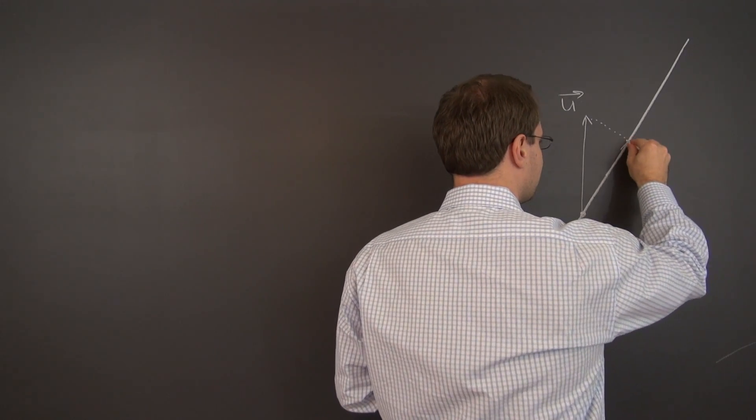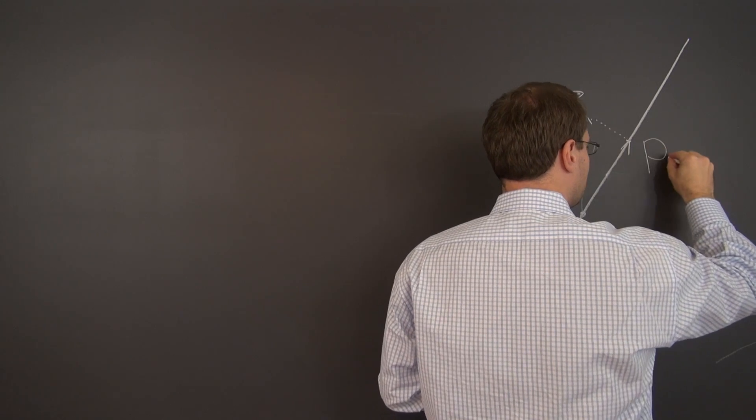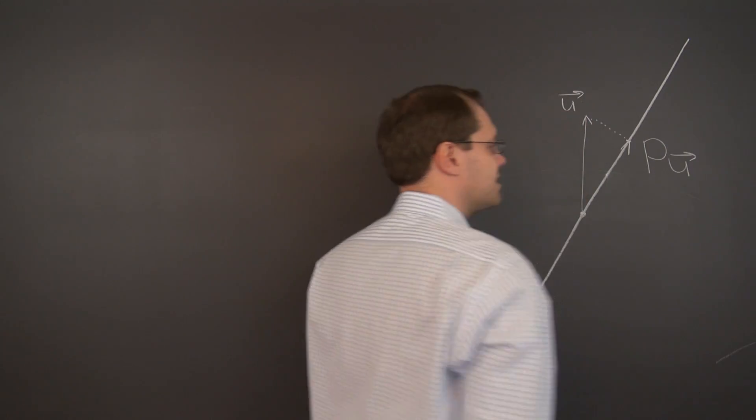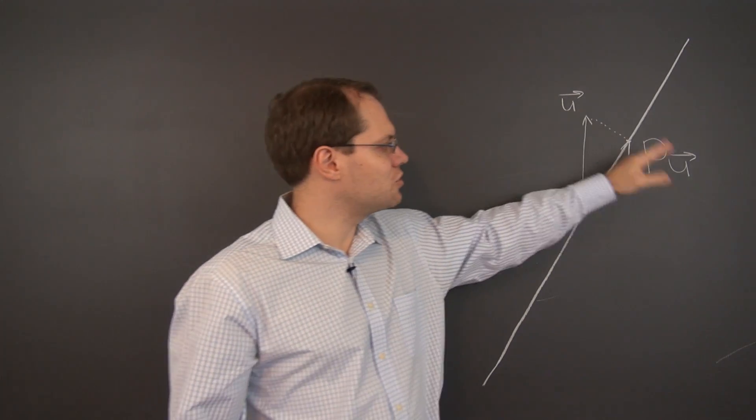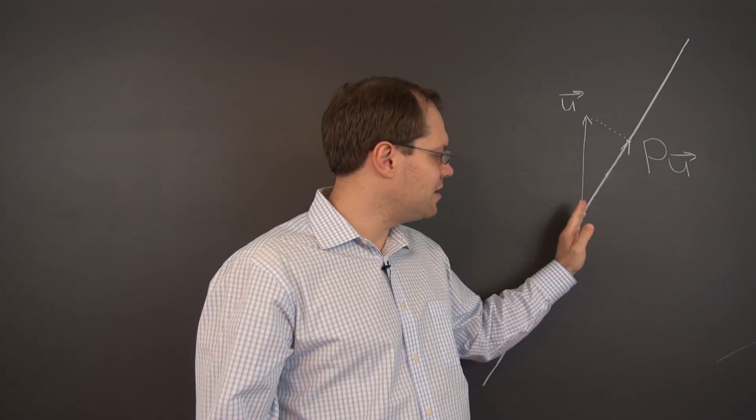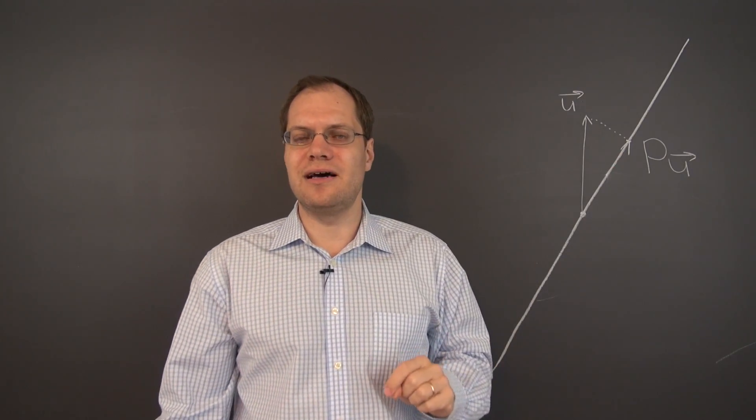If this is u, if we start with u, then this vector is p of u. And p, of course, stands for projection. So, similar to reflection, except you don't go beyond the line, you just stay on the line. So all of the images of all the vectors will land on the straight line.